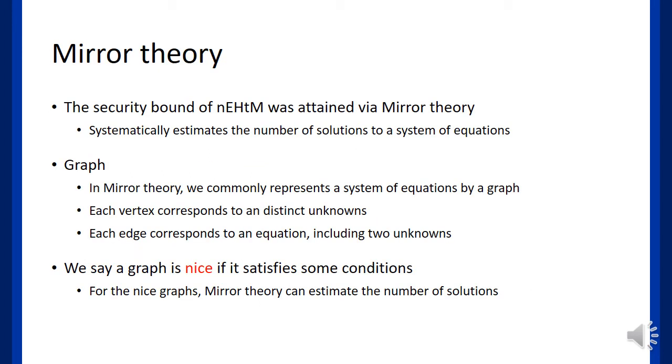The security bound of nEHtM was attained via mirror theory. The mirror theory was first proposed by Patarin in 2010, which evaluates the number of solutions of an affine system. Mirror theory sometimes understands a system of equations as a graph by identifying its equation as an edge and its unknowns as vertices.